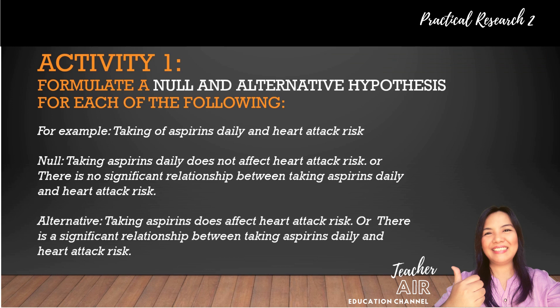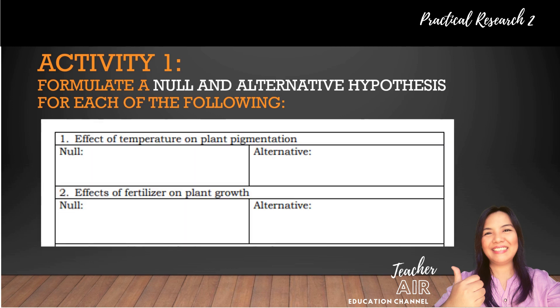Let's have an activity after our discussion on formulating the statement of the problem. Formulate a null and alternative hypothesis for each of the following. For example: taking aspirins daily and heart attack risk. The null hypothesis: 'Taking aspirins daily does not affect heart attack risk,' or 'There is no significant relationship between taking aspirins daily and heart attack risk.' The alternative hypothesis: 'Taking aspirins does affect heart attack risk,' or 'There is a significant relationship between taking aspirins daily and heart attack risk.' Now it's your turn — formulate a null and alternative hypothesis for: number one, effect of temperature on plant pigmentation; and number two, effects of fertilizer on plant growth. Take a screenshot of this activity.